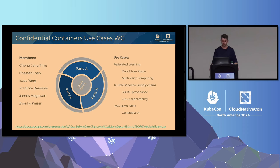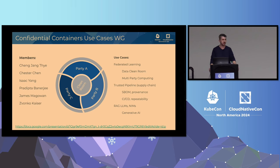Another big topic is that if you're running a confidential environment, everything needs to be trusted — your build pipeline, your CI/CD pipeline. We have several community members working on supply chain security: all things related to SBOMs, provenance, CI/CD, repeatability of builds, and attestation of builds and deliverables that we have in the enclave or confidential environment.